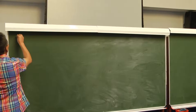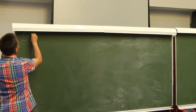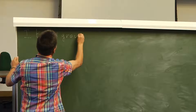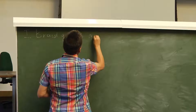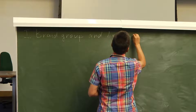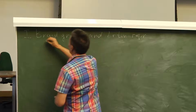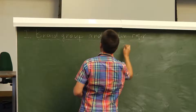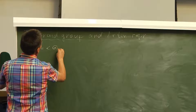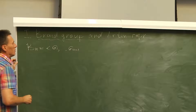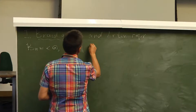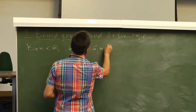First, I recall some facts from the braid group — first braid, braid group, and Artin representation. The braid group Bₙ on n strings has a representation as the group with generators σ₁, ..., σₙ₋₁ and a finite number of defining relations. There are two types of defining relations.